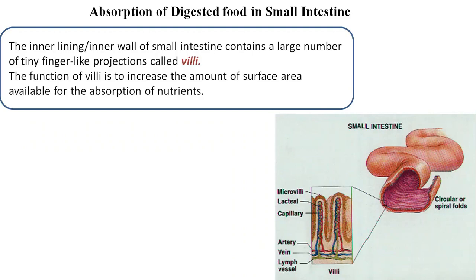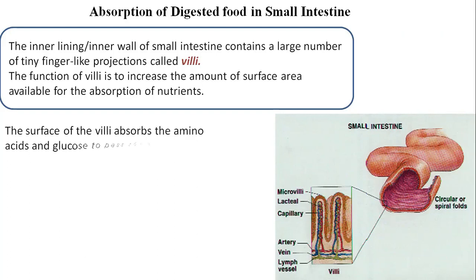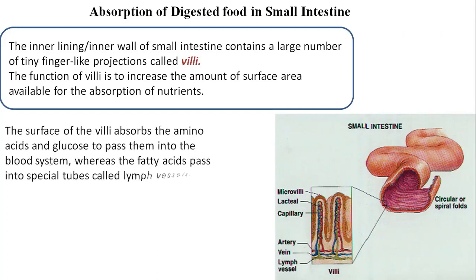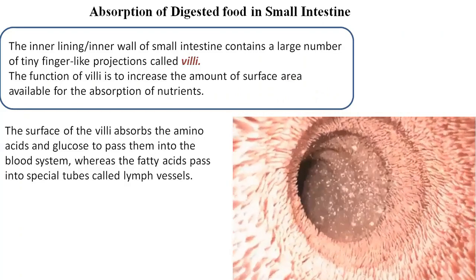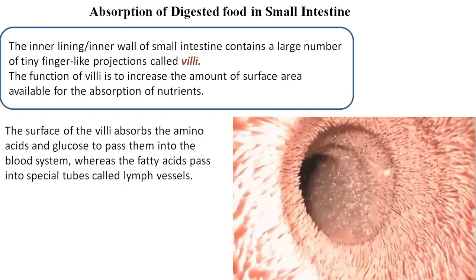Each villus transports nutrients to a network of thin and small blood vessels called capillaries and fine lymphatic vessels known as lacteals, which are close to its surface. The absorbed substances are transported via blood vessels to different organs of the body where they are used to build complex substances. The surface of the villi absorbs amino acids and glucose, passing them into the blood system, whereas fatty acids pass into special tubes called lymph vessels. Vitamins and mineral salts, being mostly soluble in water, are directly absorbed through the walls of the intestine by the process of diffusion.